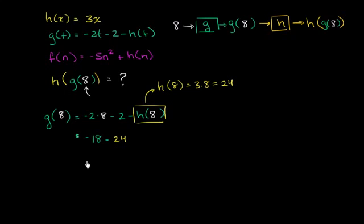So all of this business is going to be equal to negative 42. So we figured out what g of 8 is. It is negative 42. So this right over here is negative 42. And now we can input negative 42 into h. So h of negative 42. Remember, negative 42 is the same thing as g of 8. So h of g of 8 is the same thing as h of negative 42. This is going to be equal to 3 times negative 42, which is equal to negative 126.